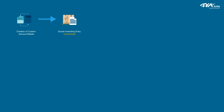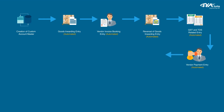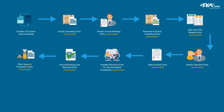The process flow includes: Creation of Custom Account Master; Goods Inwarding Entry – Automated; Vendor Invoice Booking Entry – Automated; Reversal of Goods Inwarding Entry – Automated; GST and TDS Related Entry – Automated; Vendor Payment Entry – Automated; Sales Invoice Entry – Automated; Unbilled Revenue Entry for Service Based Companies – Automated; Accrual Booking and Reversal Entry – Automated; Stock Issue to Production Entry – Automated; and Manual Journal Entry with various financial reports.